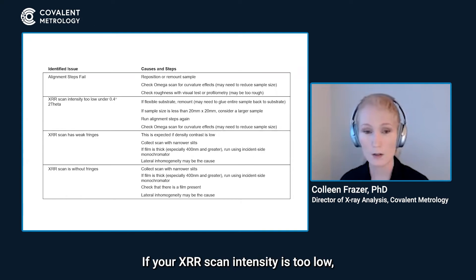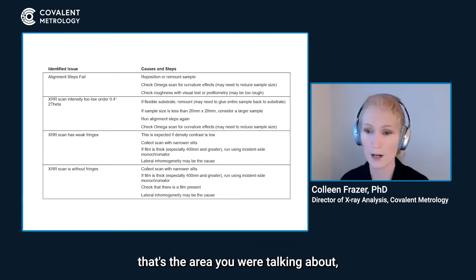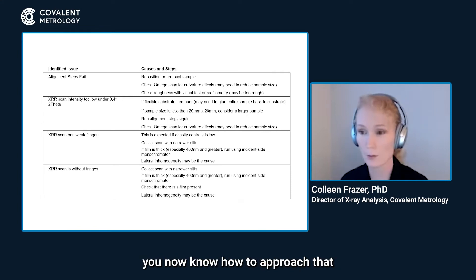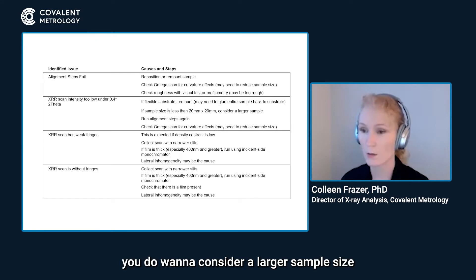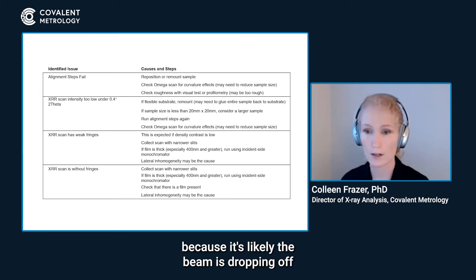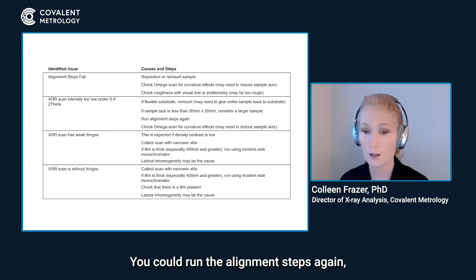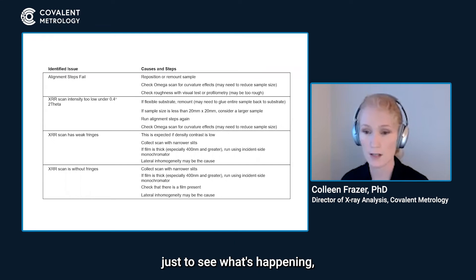If your XR scan intensity is too low under 0.4 degrees two-theta, which is usually around where the critical angle is, that's the area we're talking about. If you have a flexible substrate, you now know how to approach that and why you need to flatten it. If your sample size is less than 20 millimeters on a side, consider a larger sample size because the beam is likely dropping off. You can also run the alignment steps again as a first line of defense to see what's happening.